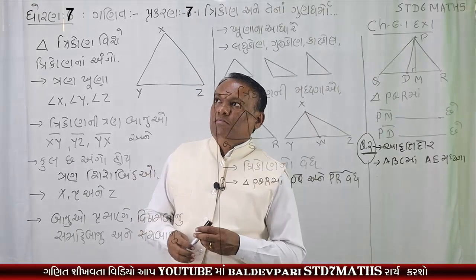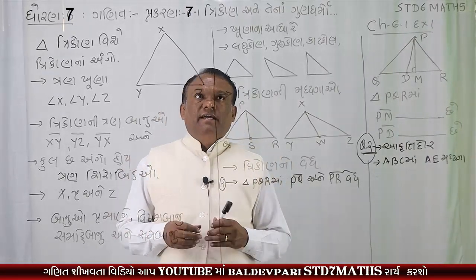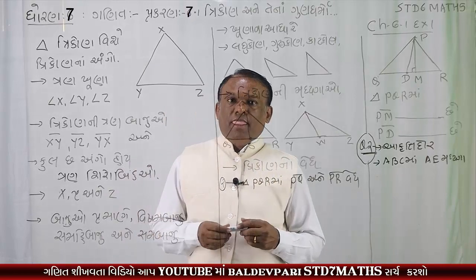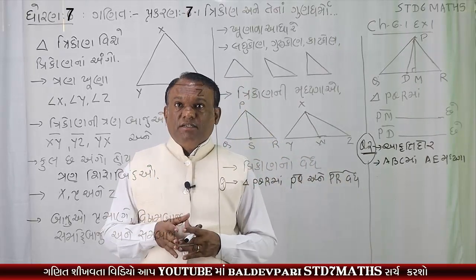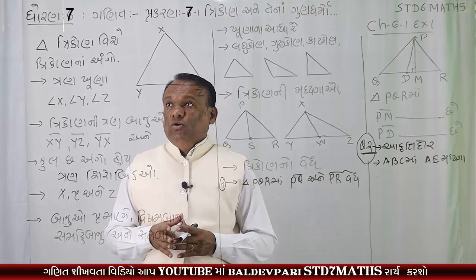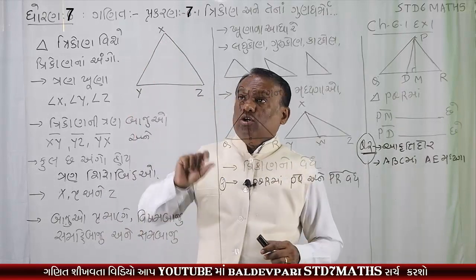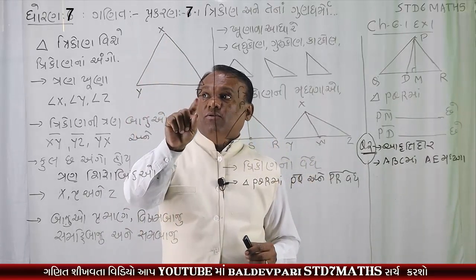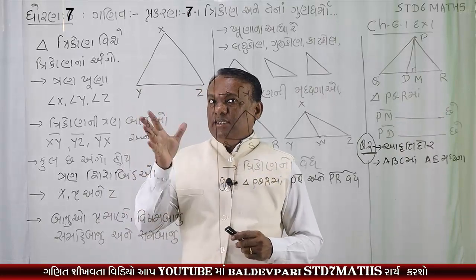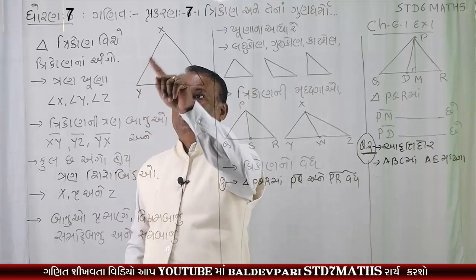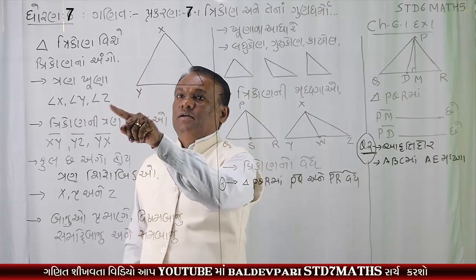Hello everyone. આપણે ત્રિકોણ અને તેના ગુણધર્મો વિશે જોઈએ. ત્રિકોણ ના ત્રણ ખૂણા હોય છે - ખૂણો x, ખૂણો y, અને ખૂણો z.